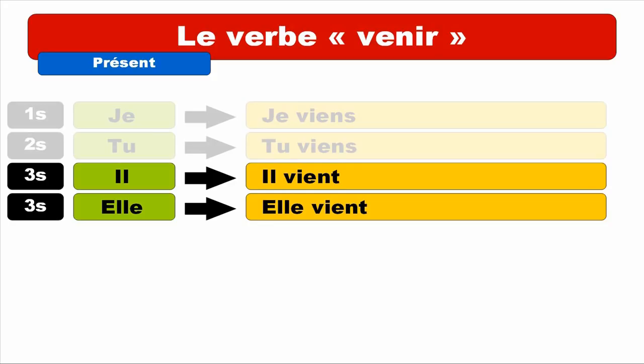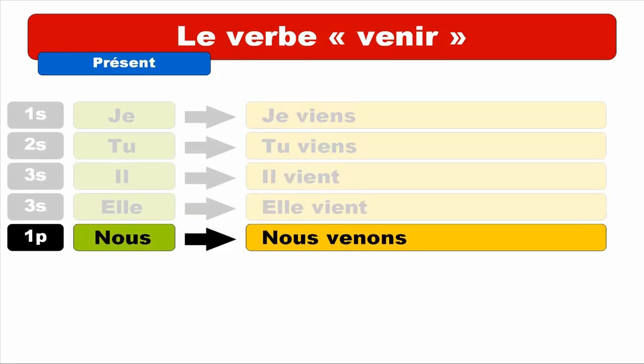So JE, TU, IL and ELLE are actually pronounced the same way — but JE and TU end with an S, and IL and ELLE end with a T. Let's see NOUS now. First person of the plural — NOUS VENONS. Keep in mind that E is pronounced like E — VE, VE, VENONS. Final S is not pronounced. NOUS VENONS. Repeat. NOUS VENONS.